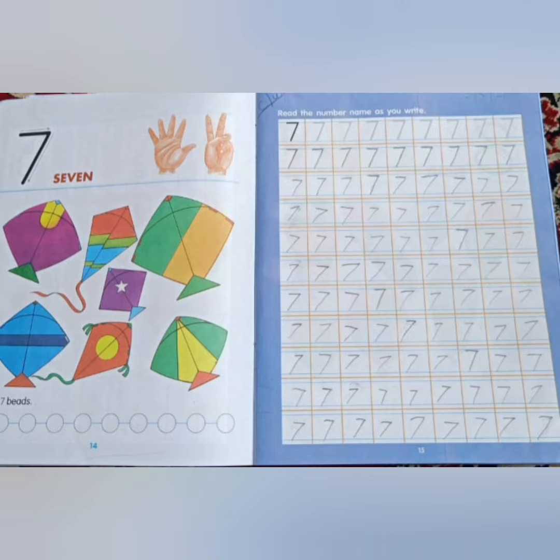Count how many kites are there. 1, 2, 3, 4, 5, 6, 7. There are 7 kites.